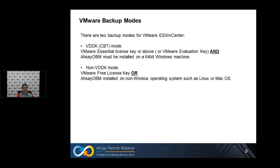The first is CBT or VDDK mode, and the other is non-VDDK mode. What determines which backup mode OBM uses? For CBT mode, you must have a VMware Essentials license key, a paid license key, or a VMware evaluation key, and OBM must be installed on a 64-bit Windows machine. For non-VDDK mode, this usually applies to ESXi hosts using a VMware free license key, or if OBM is installed on a non-Windows operating system such as Linux or Mac OS.